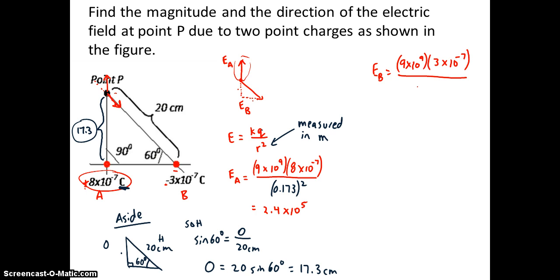We have 3 times 10 to the power of negative 7 for the charge. And the distance between them we know. Remember to convert to meters. We put this in our calculator and you get 6.75 times 10 to the power of 4. Now we know the length of our two vectors.